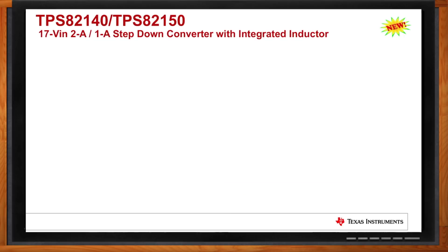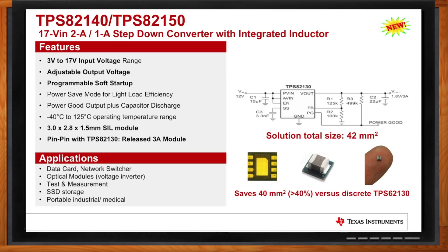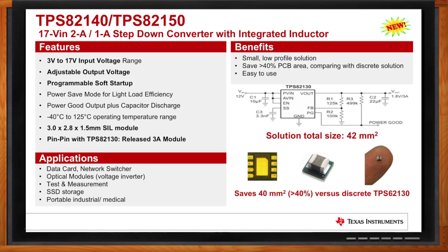The next recently released devices are embedded products — a 2A and 1A version — that are pin-for-pin compatible with the TPS82130. This is a very popular product family, supporting 12V and 5V input bus voltages. With this family you can get 1, 2, and 3A of output current in a pin-for-pin compatible package. Very easy to use and very small solution size.